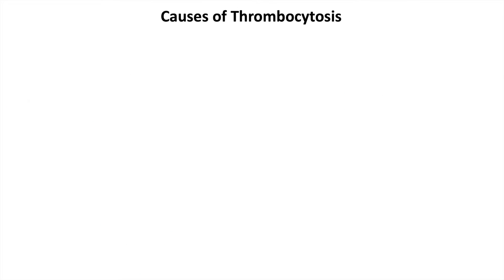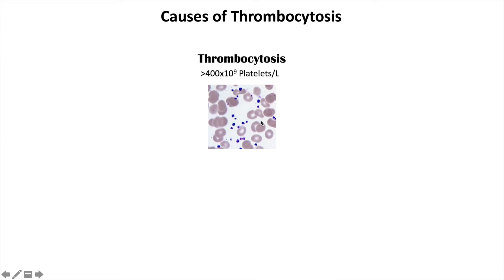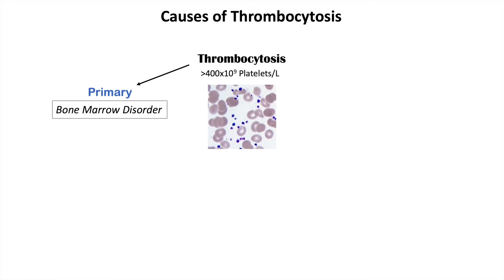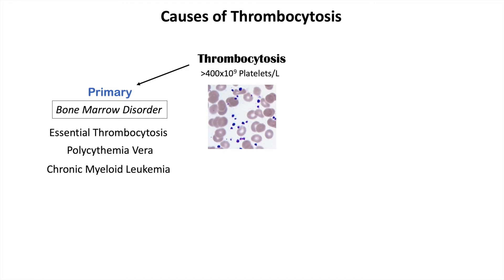There are quite a few causes of thrombocytosis, and we can break them down into two main categories. Primary causes are essentially bone marrow disorders, where something is wrong — perhaps the thrombopoietin receptor is chronically activated — causing the bone marrow to produce way too many platelets. These conditions include essential thrombocytosis, polycythemia vera, chronic myeloid leukemia, and primary myelofibrosis.